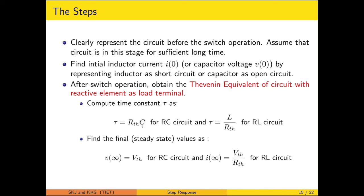The Thevenin equivalent is formed by treating the reactive element as the load terminal. The calculated RTH determines the time constant for both RC and RL circuits: τ = RTH·C for RC and τ = L/RTH for RL. From this Thevenin equivalent, VTH gives the final voltage value for the RC circuit, while for the RL circuit I(∞) = VTH/RTH, since the analysis is carried out using Thevenin equivalents.